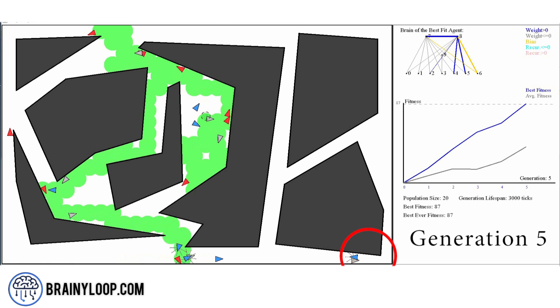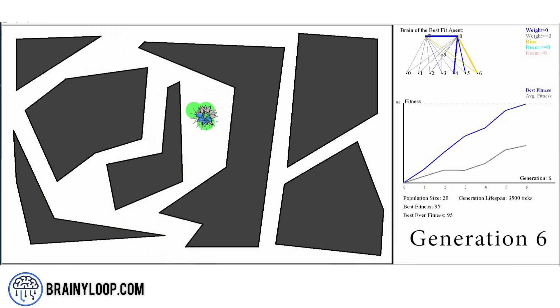In the fifth generation, we have agents that can pass through the narrow pathway but they are very slow when navigating there and some still get stuck.